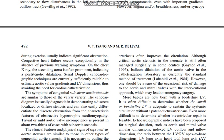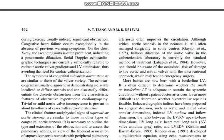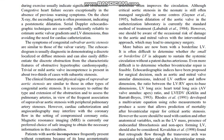The symptoms of congenital subvalvular aortic stenosis are similar to those of the valvular variety. The echocardiogram is usually diagnostic in demonstrating a discrete localized or diffuse stenosis, and can also easily differentiate the discrete obstruction from the characteristic features of obstructive hypertrophic cardiomyopathy. Trivial or mild aortic valve incompetence is present in about two-thirds of cases with subaortic stenosis. The clinical features and physical signs of subvalvular aortic stenosis are similar to those in other types of congenital aortic stenosis.